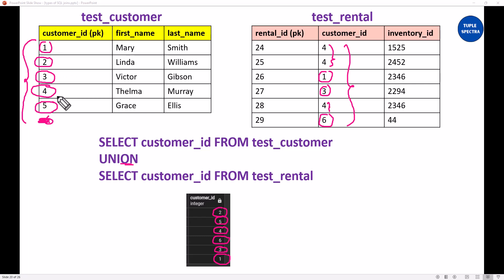There is also another operator called union all. We are going to see that when we write the query in pgAdmin. For union all, that is going to retain the duplicates. So if you don't want to remove duplicates, instead of using union, you would have to use union all. Let us jump to pgAdmin and write some queries.